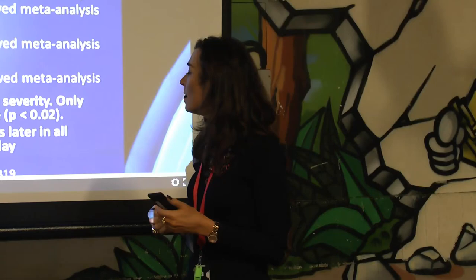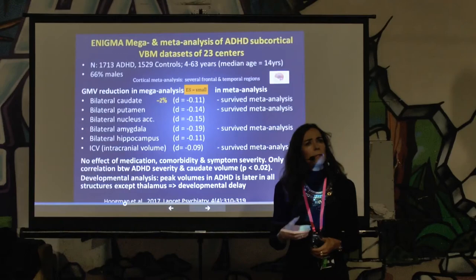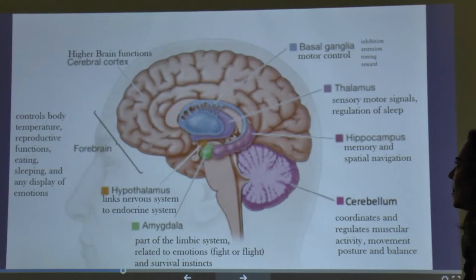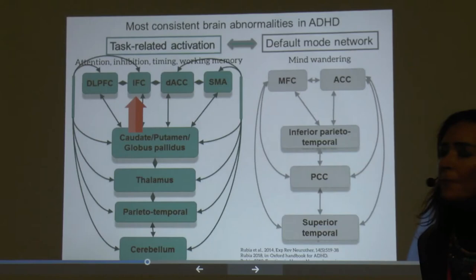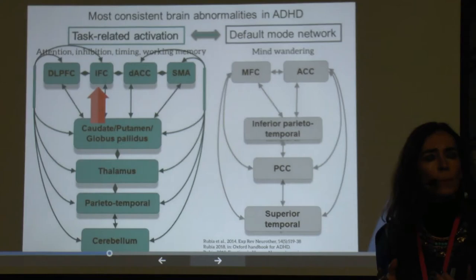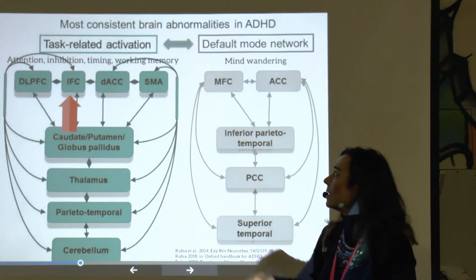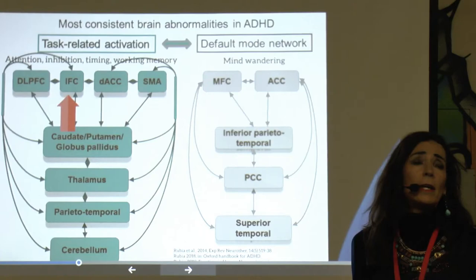Another area found to be abnormal by the ENIGMA group is limbic areas. The limbic system is important for emotion processing, and this is interesting because ADHD patients also have emotional dysregulation problems. The findings show that ADHD is characterized by abnormalities in both the structure and function of the brain, with the basal ganglia regions and frontal areas — particularly the inferior frontal cortex — most consistently impaired.